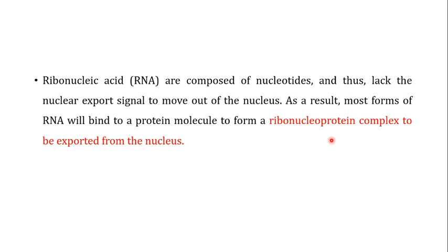One interesting point is that RNA molecules are composed of nucleotides and do not have a nuclear export signal, yet we know that RNA does move from the nucleus into the cytoplasm. What happens is that most forms of RNA bind to protein molecules, forming ribonucleoprotein complexes. These ribonucleoprotein complexes are exported from the nucleus because the exportin interacts with the protein part of the complex, thereby indirectly moving the RNA from the nucleus into the cytoplasm. That is all about the karyopherins — please subscribe, like, and share.